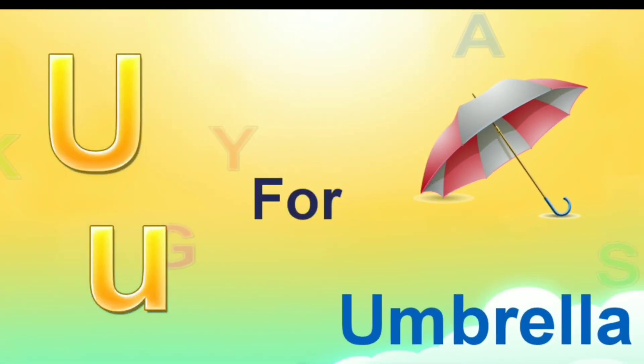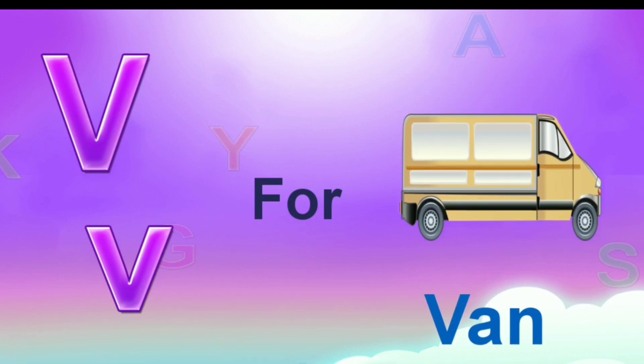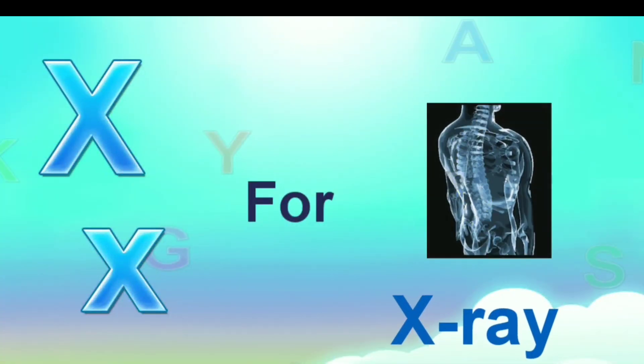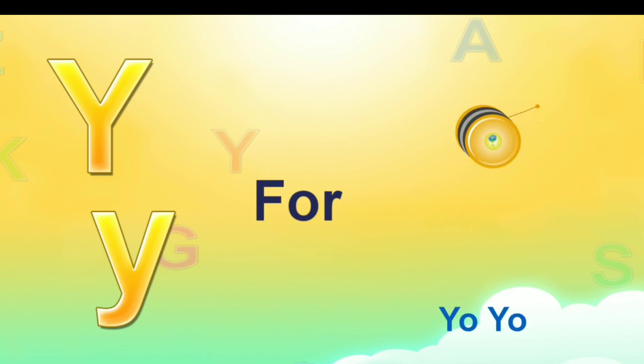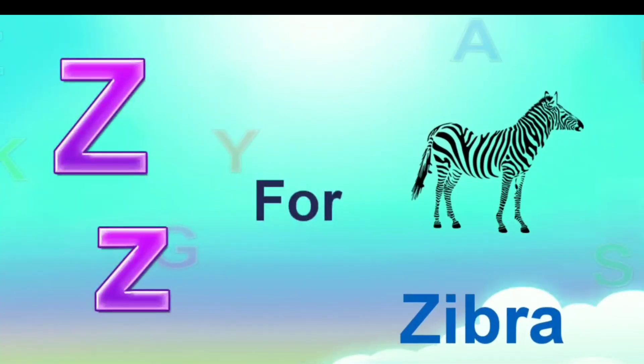U for umbrella. V for van. W for watermelon. X for egg. Y for yo-yo. Z for zebra.